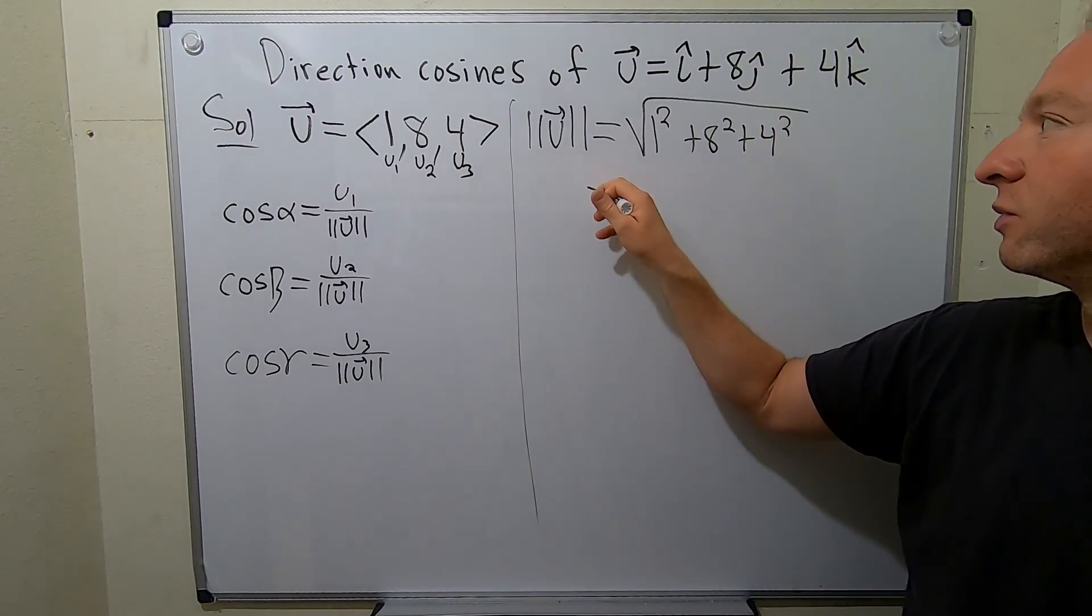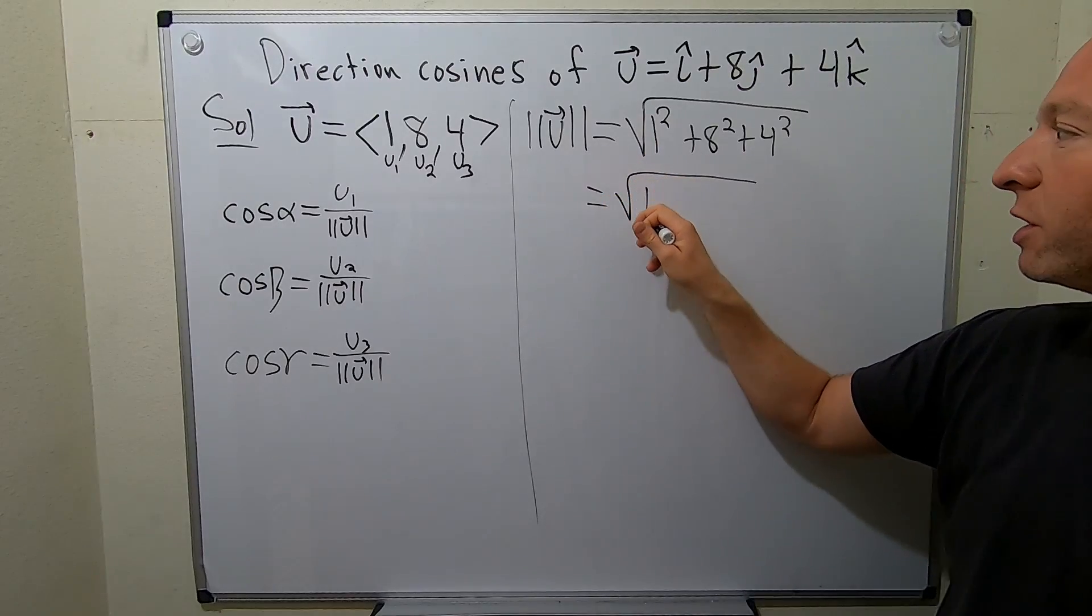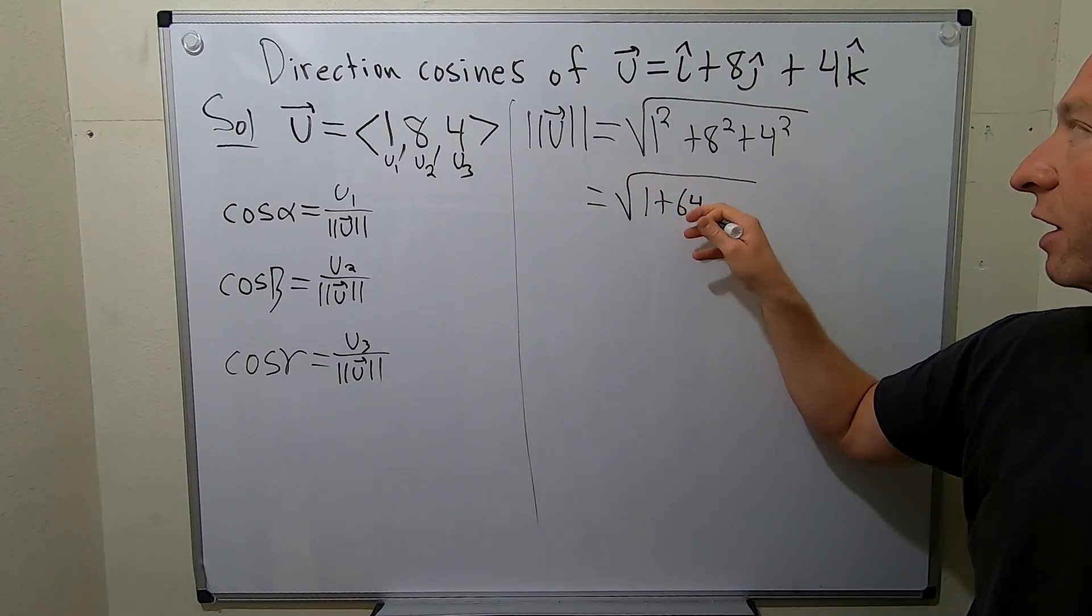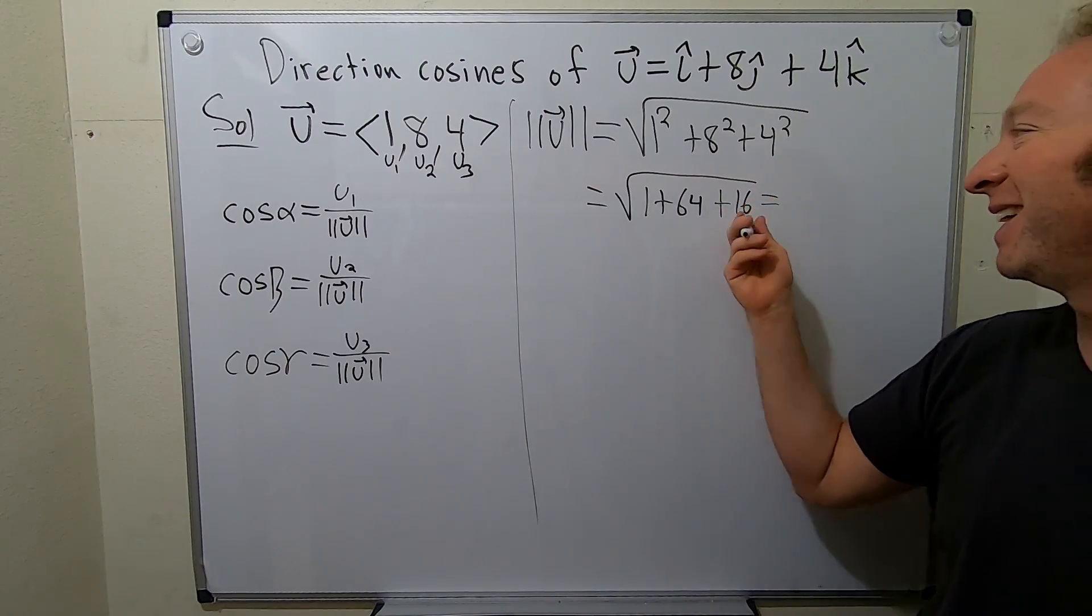So, this is going to be square root of 1, 8 squared is 64, and then 4 squared is 16. Oh, happy day, happy day.